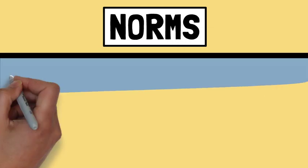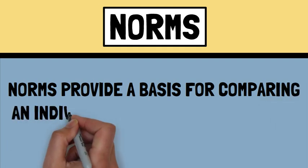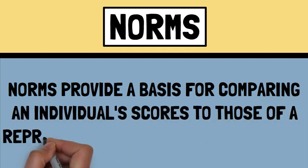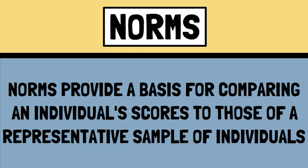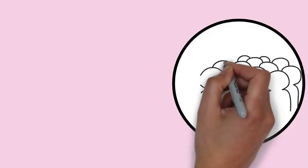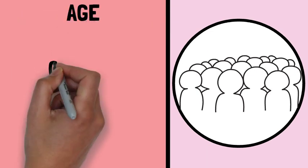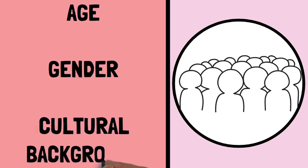Norms are also a crucial component of psychological testing, as they provide a basis for comparing an individual's score to those of a representative sample. Norms provide information on the distribution of scores, allowing clinicians to compare an individual's performance to a group of individuals with similar characteristics. Norms are typically established based on a representative sample of individuals from the same age, gender, and cultural background as the test taker.